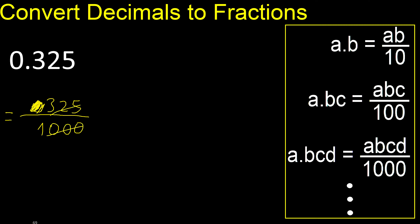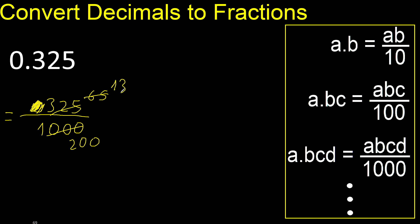3 — can be simplified because it can be divided by the same number, divided by 5. 325 divided by 5 is 65, divided by 5 is 13. 1000 divided by 5 is 200, divided by 5 is 40. Finish.